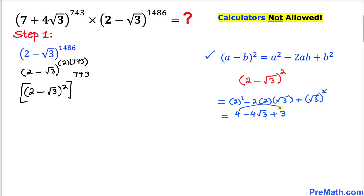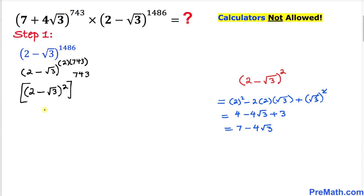Combining like terms, 4 + 3 = 7, so we get 7 - 4√3. Therefore, (2 - √3)² simplifies to 7 - 4√3, and we replace the bracketed part with this, giving us (7 - 4√3)^743.